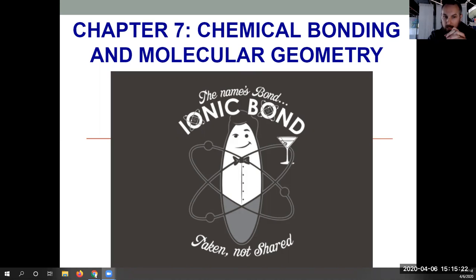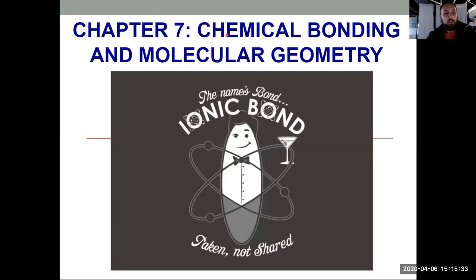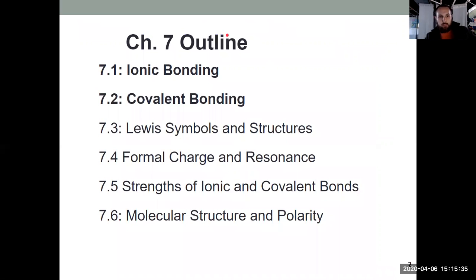The big takeaways from Chapter 7, it's not just learning about chemical bonding, but learning how to do Lewis structures. Lewis structures are introduced in 7.3. We learn Lewis symbols first and then get into Lewis structures, and everything after that kind of builds on those ideas.